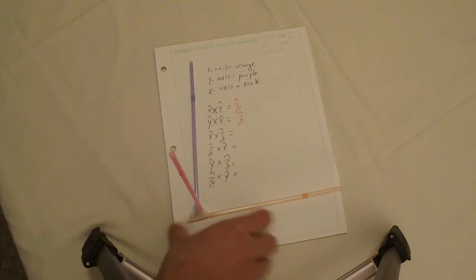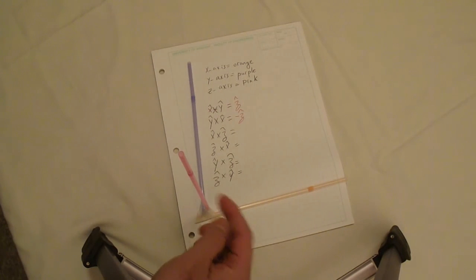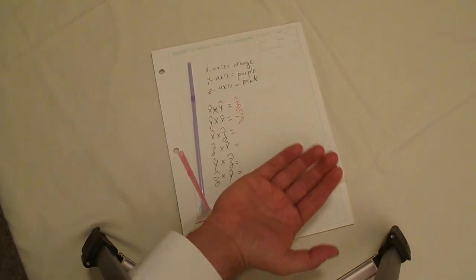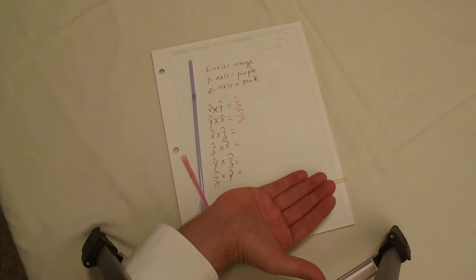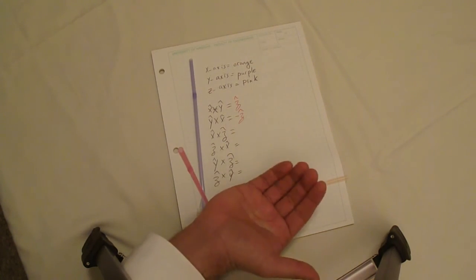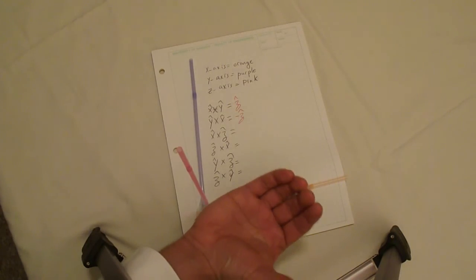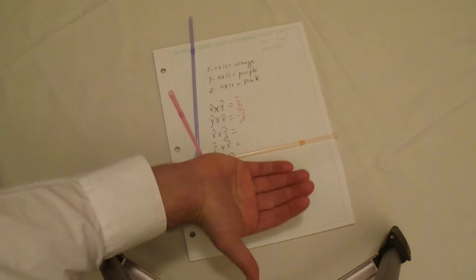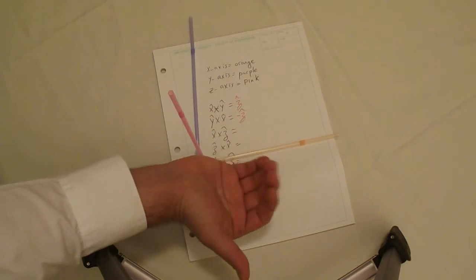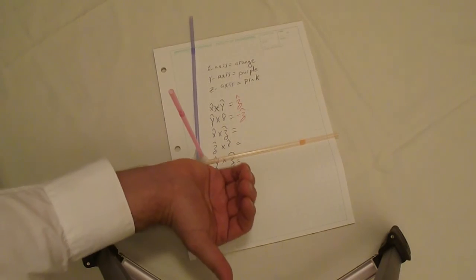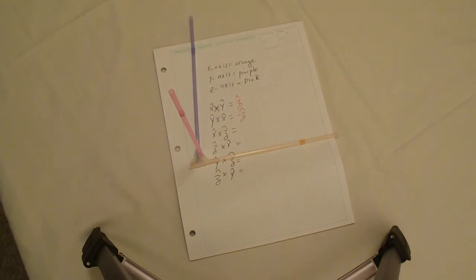X cross Z: the orange and the pink. Right-hand rule — take your right hand adjacent to your X and curl it towards your pink straw, which is your Z axis. You can see where your thumb is pointing: it is opposite the direction of the Y axis, pointing in the negative Y direction. So X cross Z equals minus Y-hat.